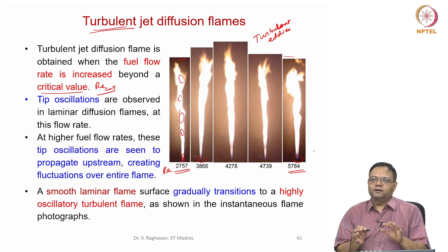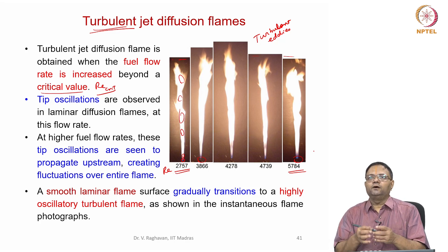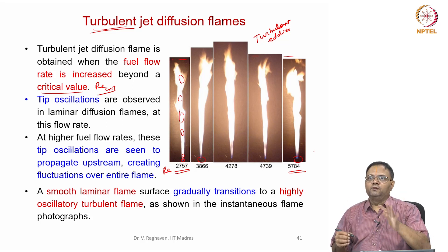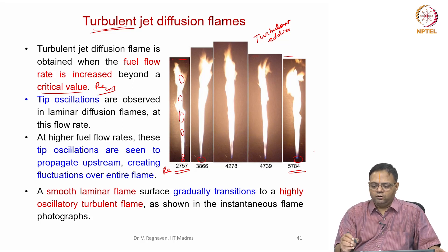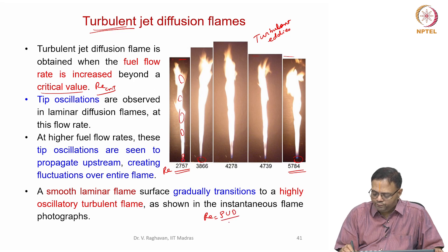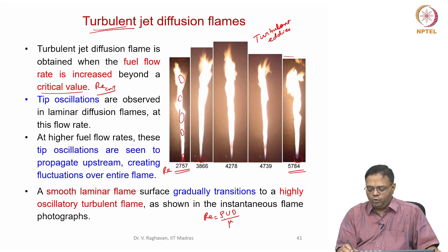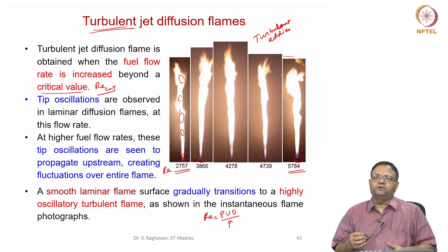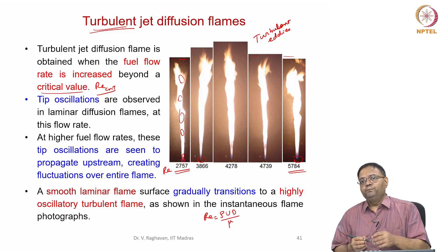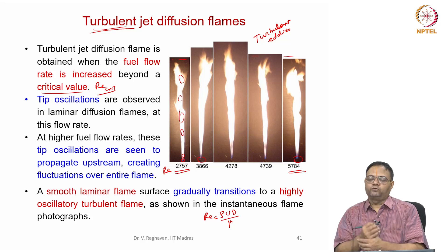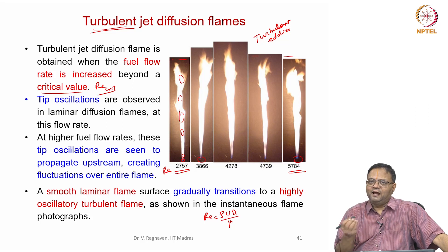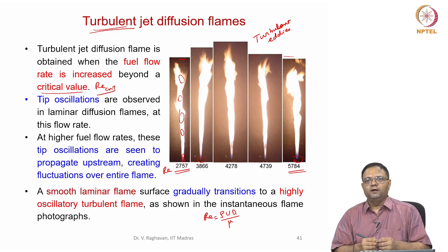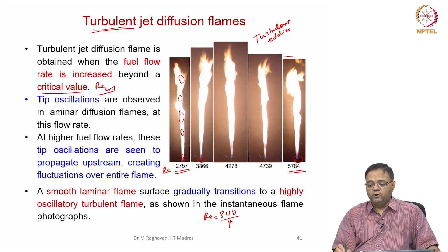To avoid liftoff while operating in turbulent mode, you can use a slightly larger diameter burner to lower the jet velocity while maintaining the same Reynolds number (Re = ρuD/μ). The velocity is what causes liftoff — higher velocity reduces residence time for reactants, causing the flame to lift. Using a larger diameter allows operation at the same Re with lower injection velocity, preventing liftoff.